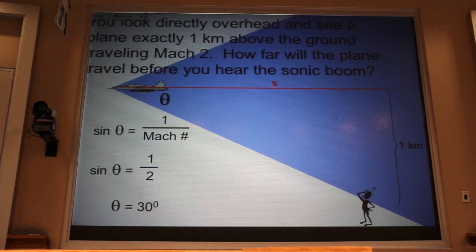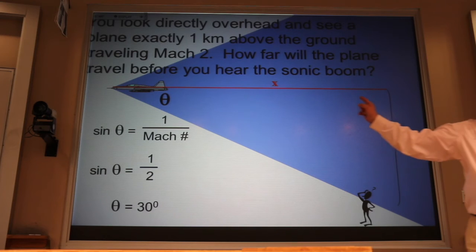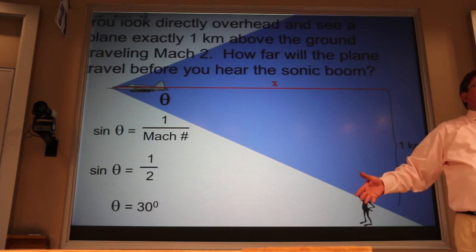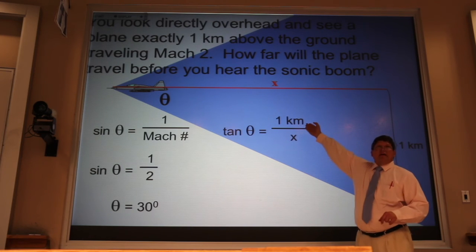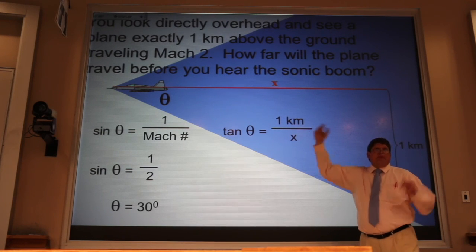Now, that means that Mach cone angle is thirty degrees. If I know that angle, I can figure out the geometry. I'm trying to compare the opposite side to the adjacent side. That cries out that I should use the tangent. The tangent of thirty degrees is equal to this side that I know divided by that side that I want to know. At this point, it's just math.